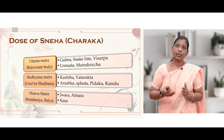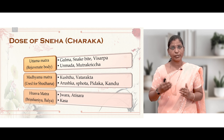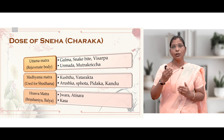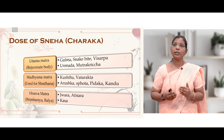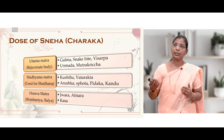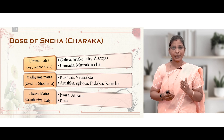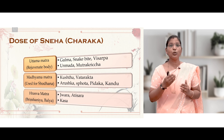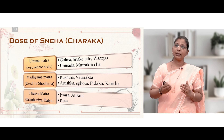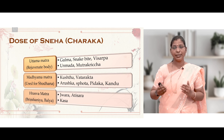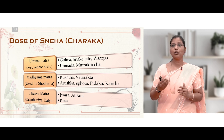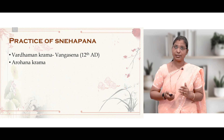According to Charaka, doses are classified into three: Uttam Matra (rejuvenates body, used in Gulma, snakebite, Visarpa, Unmada, Mutrakriccha), Madhyam Matra (used for Shodhana, indicated in Kushtha, Vatarakta, Arushka, Sphuta, Pidaka, Kandu), and Raswa Matra (Brimhaniya/Balya Matra, used in Jwara, Atisara, and Kasa diseases).